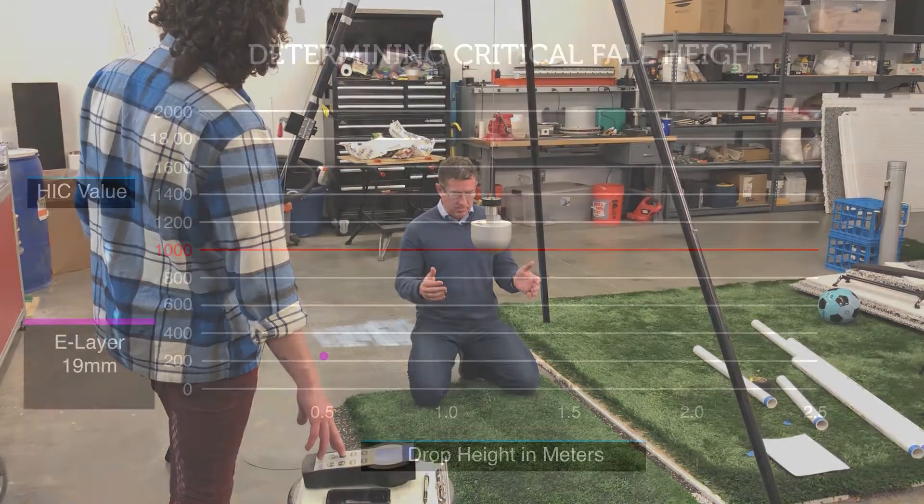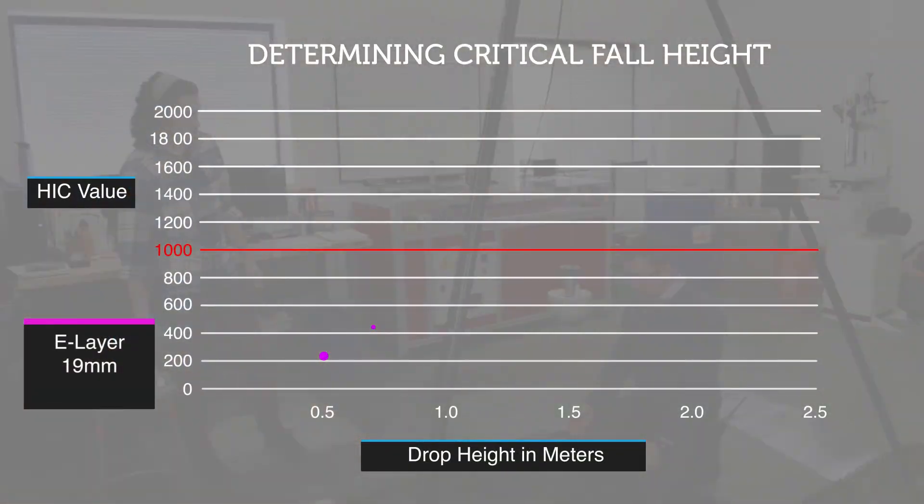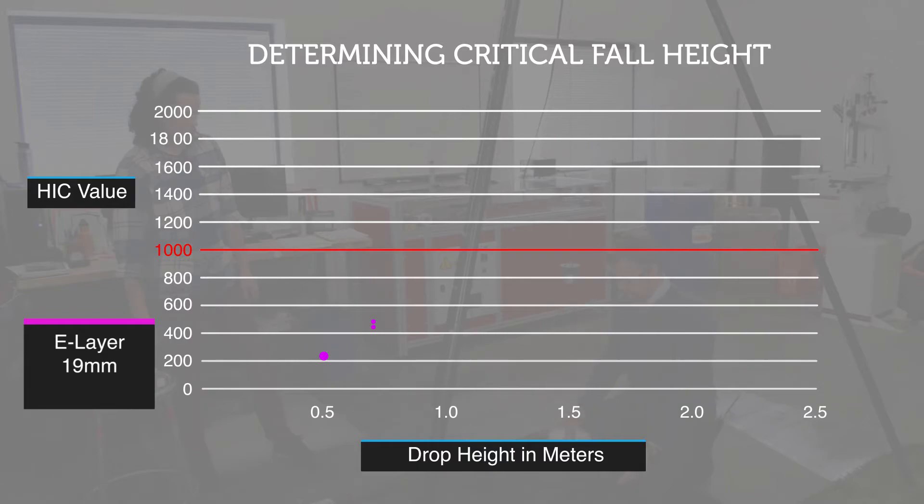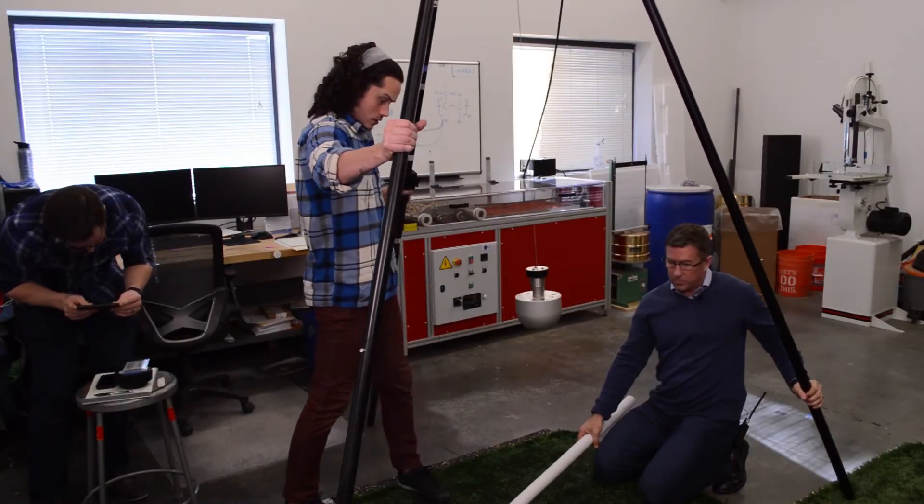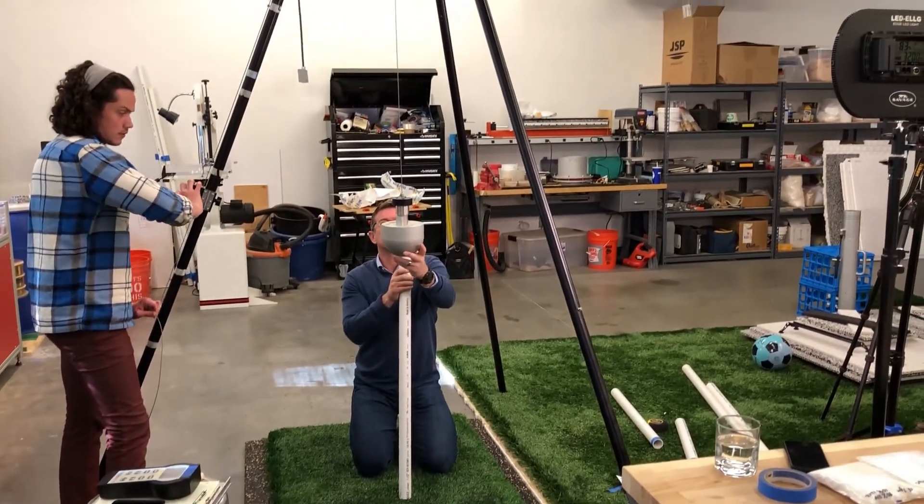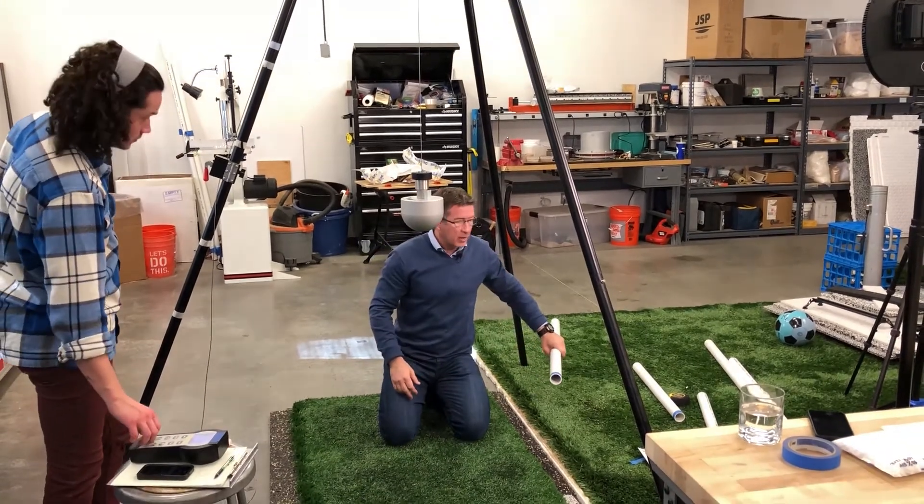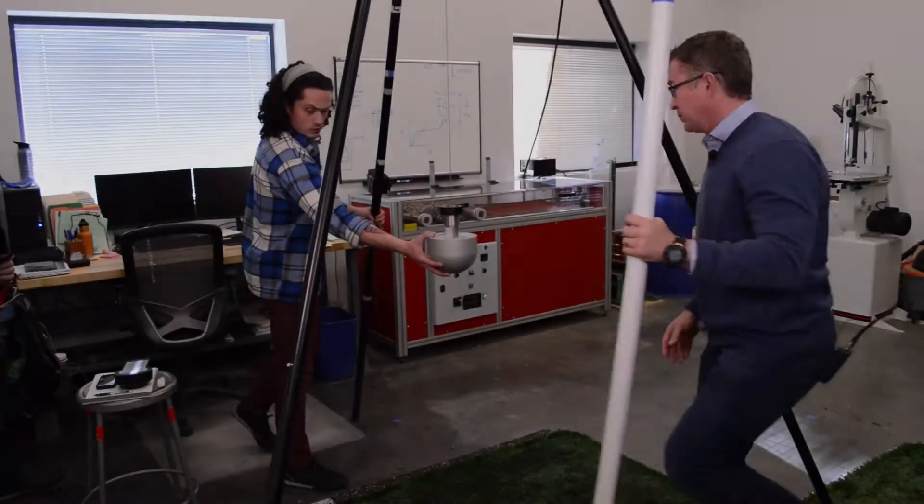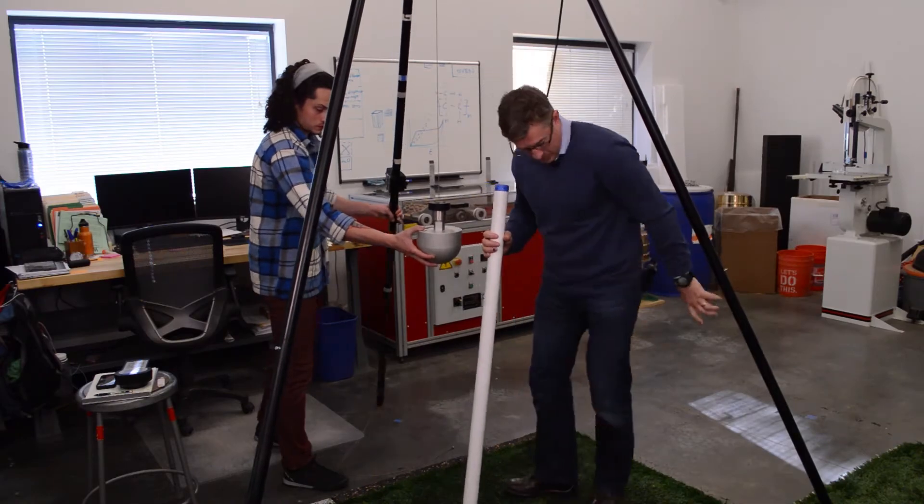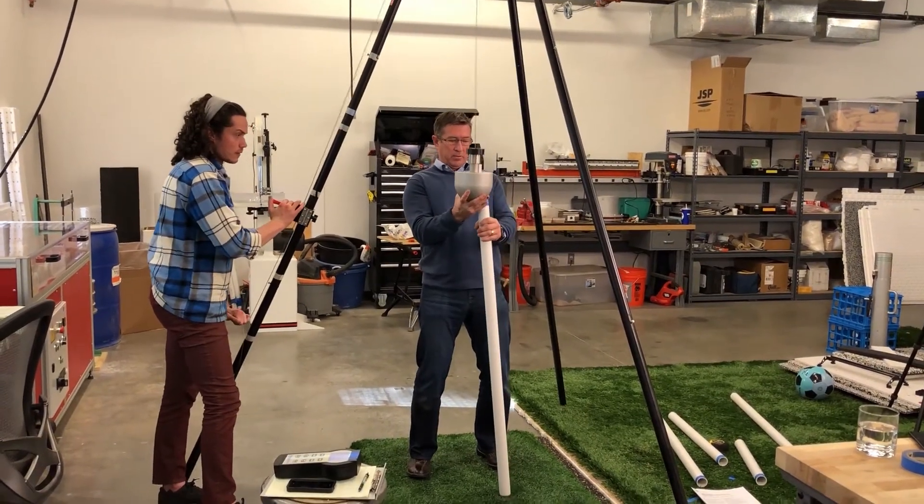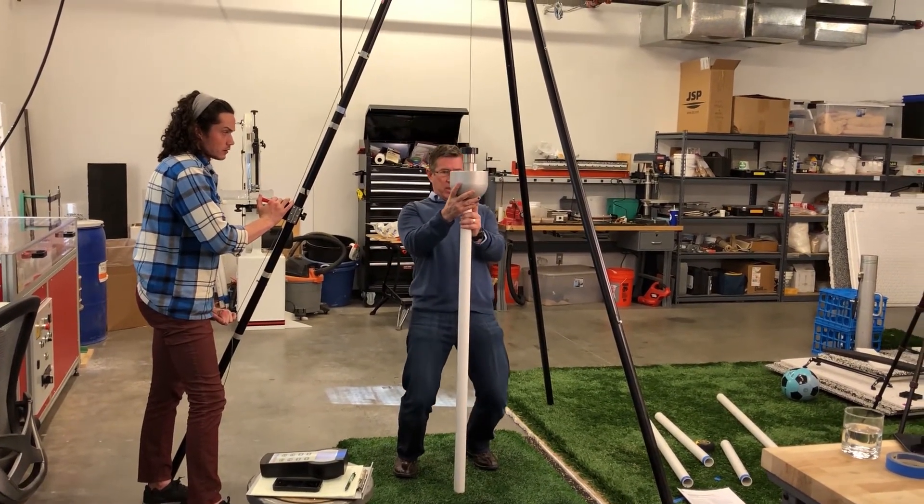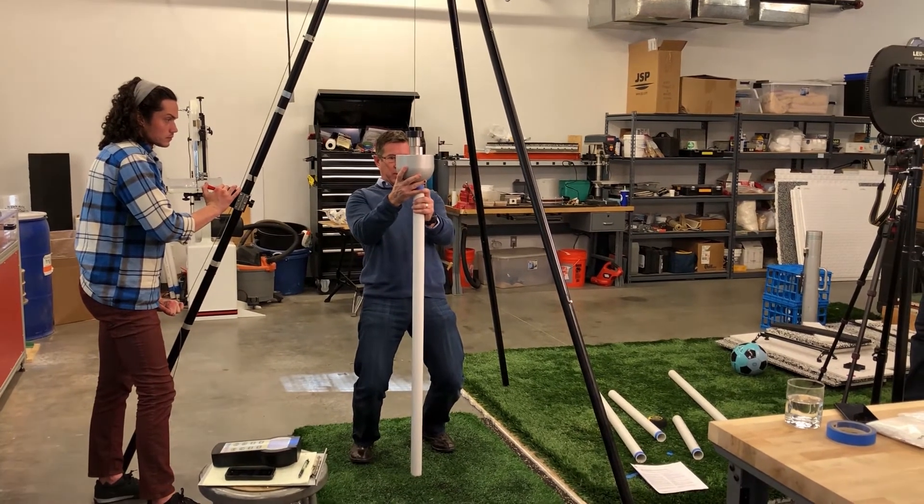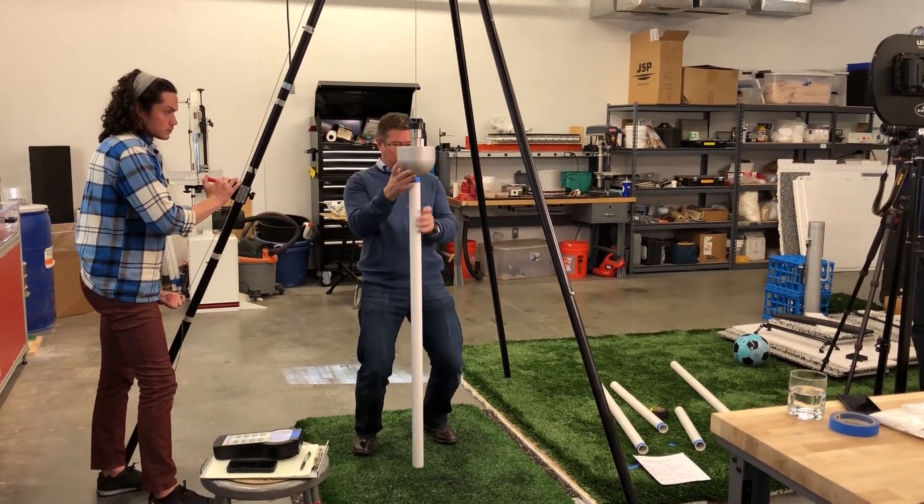First drop, second height. Next drop is one meter. So next is 1.3 meters. This is the OneTurf concept minimum critical fall height.